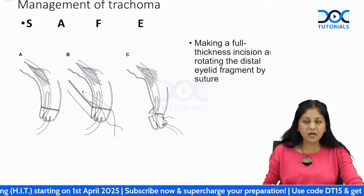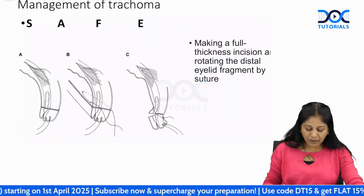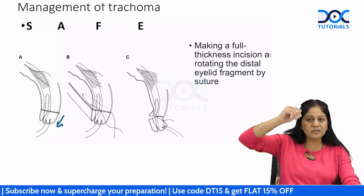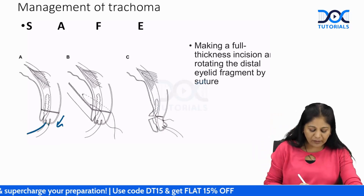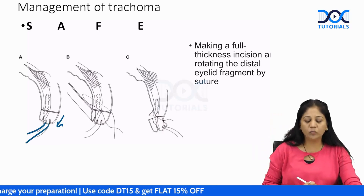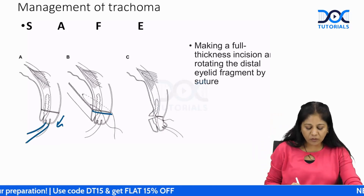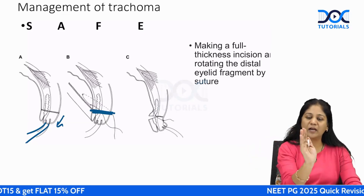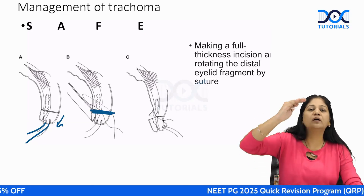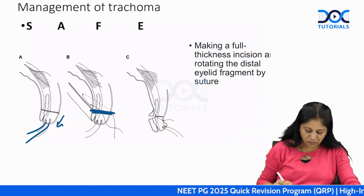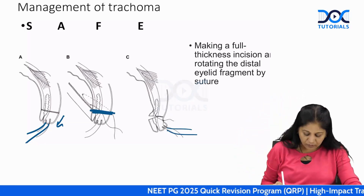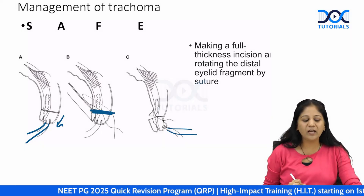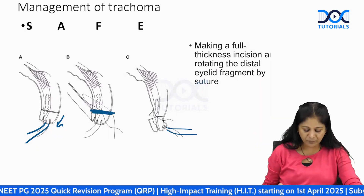Regarding the surgery: whenever the eyelid margins are going inwards or the eyelashes are turned inwards, we give a full-thickness incision so that the lashes which were pointing inward will turn outward. This is the surgical treatment for trichiatic eyelash.